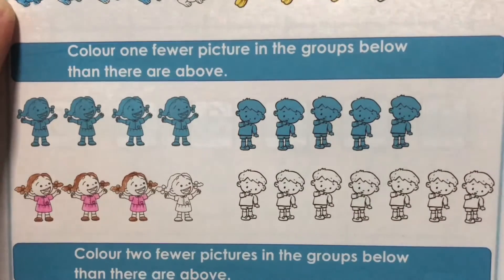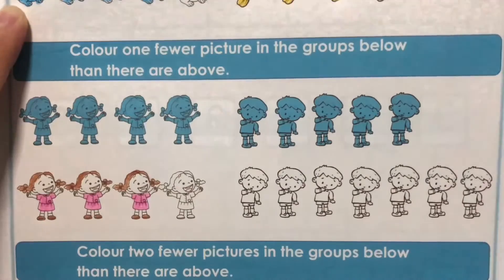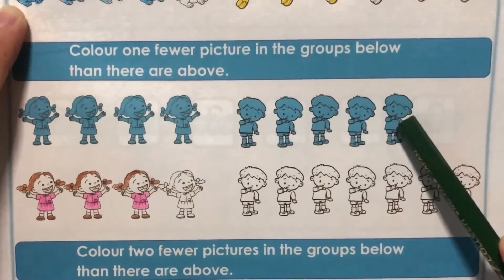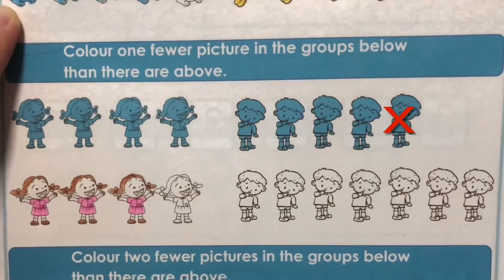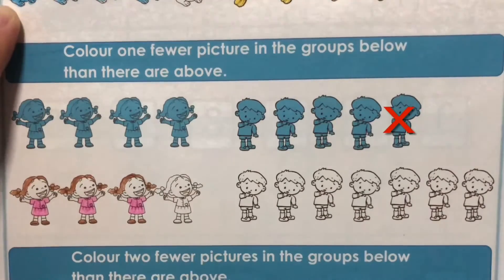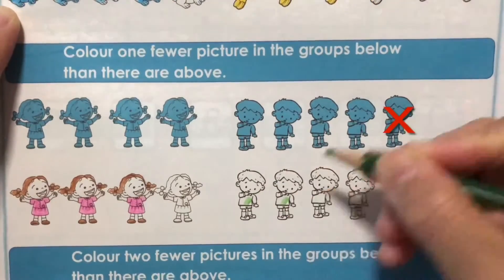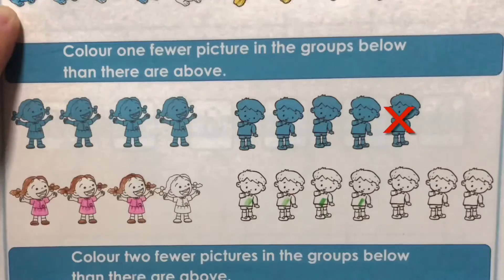Now let's proceed to the boy pictures. You can choose any color you'd like to use. Let's count the boy pictures above: 1, 2, 3, 4, 5. Less than one picture, there are four boy pictures left. Mark four boy pictures below: 1, 2, 3, 4. Then color the boy pictures nicely.